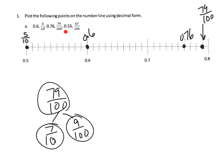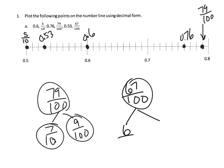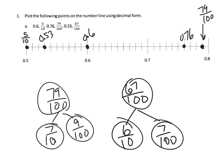Then 0.53 — that's five tenths plus three hundredths, so that goes right here. Lastly, sixty-seven hundredths: using a number bond, that's six tenths plus seven hundredths. Here's your six tenths, and then an extra seven hundredths, so sixty-seven hundredths goes right there.